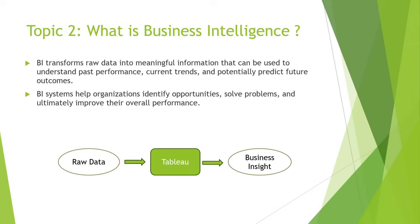The next topic is what is business intelligence, or BI. BI transforms raw data into meaningful information that can be used to understand past performance, current trends, and potentially predict future outcomes. BI systems help organizations identify opportunities, solve problems, and ultimately improve their overall performance.